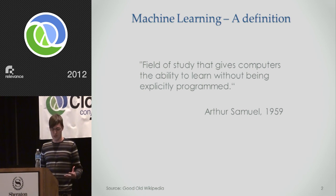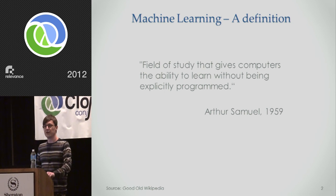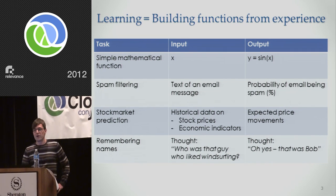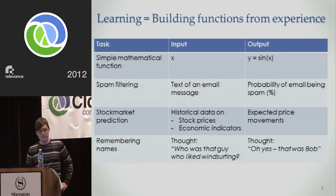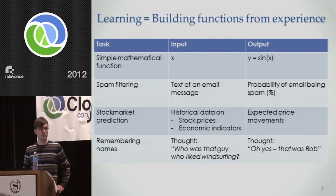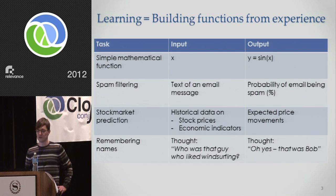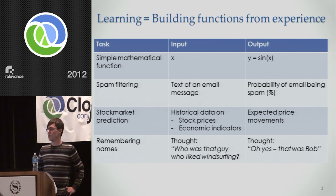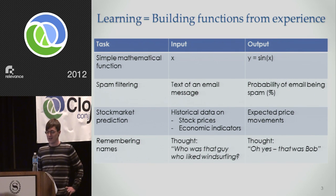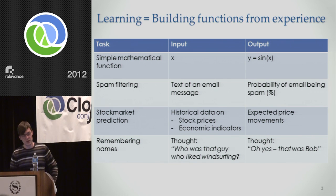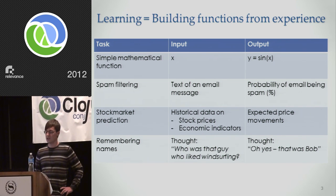And it's helpful to think about what that actually means. I find it helpful to think about learning in a very specific way. Learning means building functions from experience. Every machine learning problem can ultimately be conceptualized as a function mapping some kind of input to some kind of output. It can be a simple mathematical function. You can do spam filtering if you interpret the output as a probability of an email being spam. If you fancy making some money, you can do some stock market prediction, and good luck with that. And even human learning can be thought of this way, as long as you think of the input and output as being a thought, as being a state of mind.